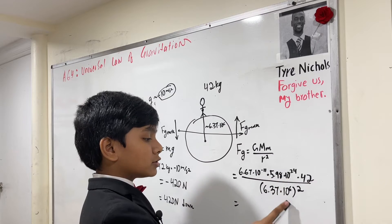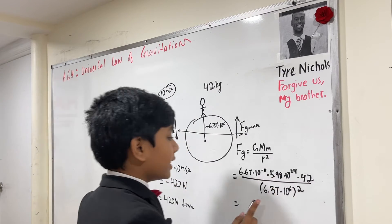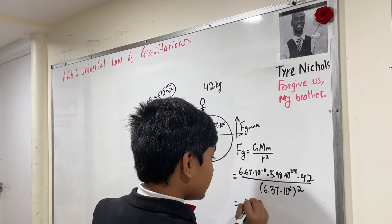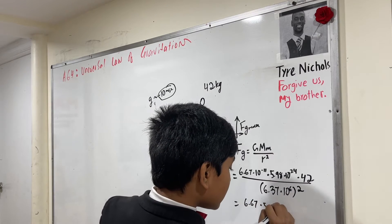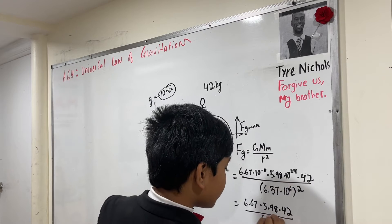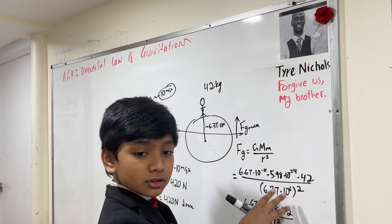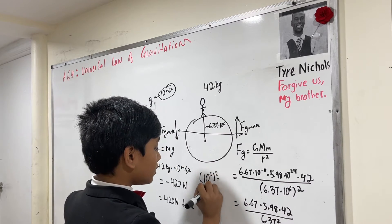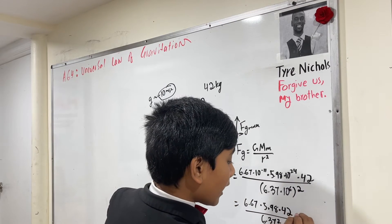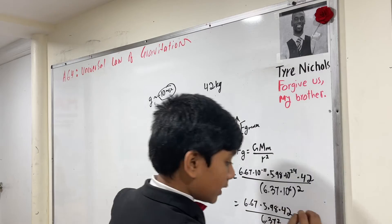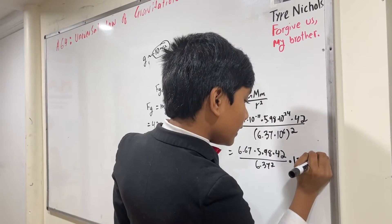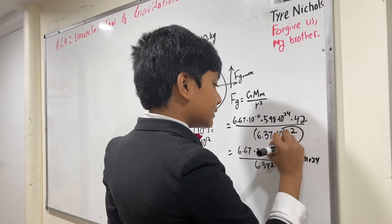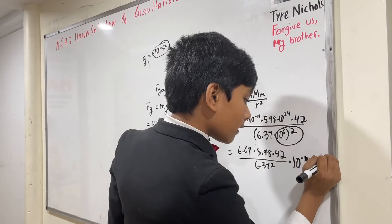So now what is this going to give us? Well, we can separate the powers of 10 from the rest and then work it out from there. So this gives us 6.67 times 5.98 times 42 over 6.37 squared. We can take this 10 to the sixth squared, and 10 to the sixth squared is 10 to the 12th. So we have times 10 to the minus 11, plus 24, and then we add in the minus 12. Why minus? Because this 10 to the sixth squared is on the bottom.